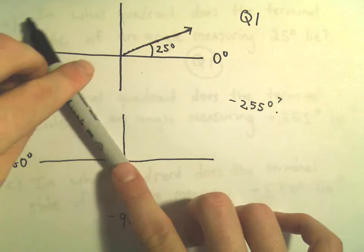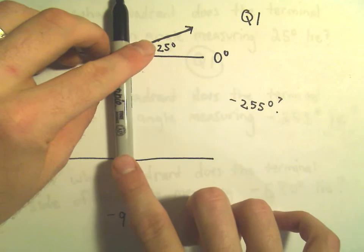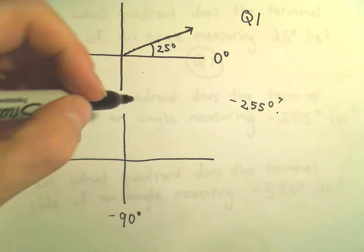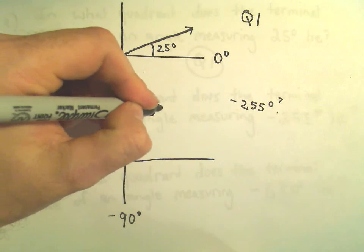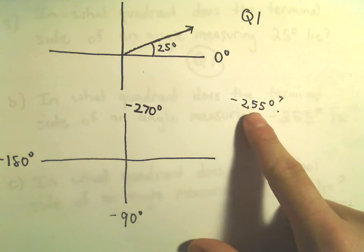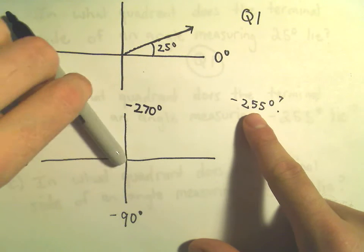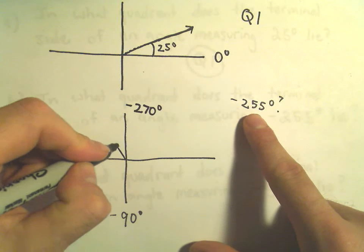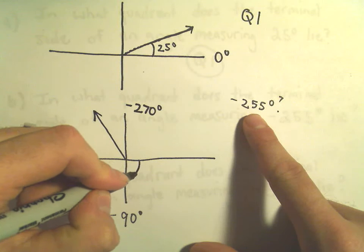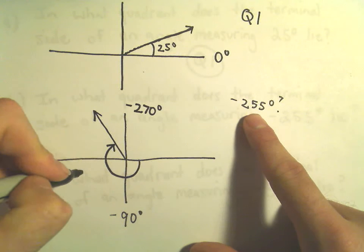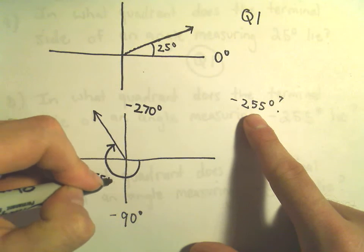If we end up at the top of the positive y-axis, that's going to be negative 270 degrees. Now we've gone too far because we only want to go to negative 255. It looks like the angle would be somewhere up here. This would be negative 255 degrees.